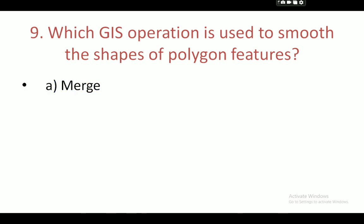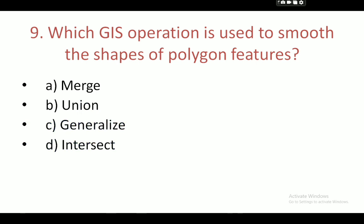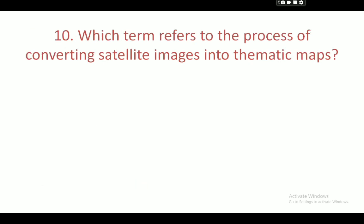Next question: which GIS operation is used to smooth the shapes of polygon features? Your options are: merge, union, generalize, and intersect. Your correct answer is generalize.